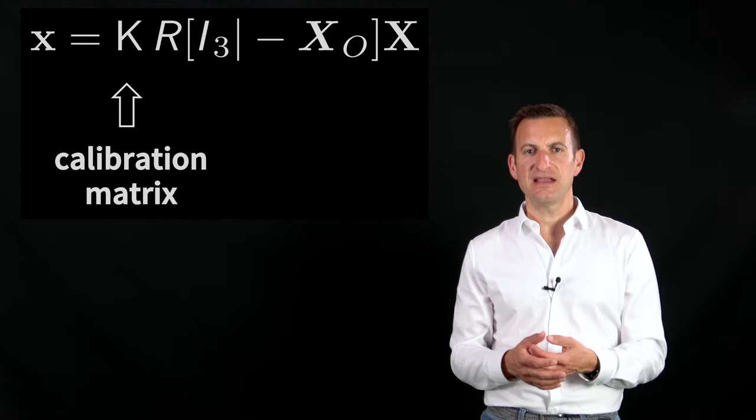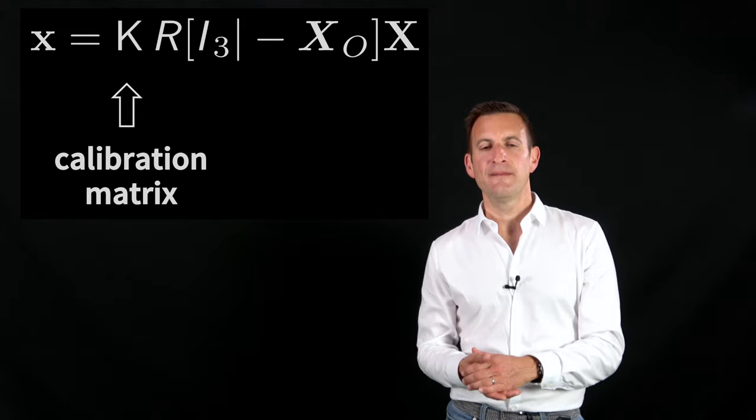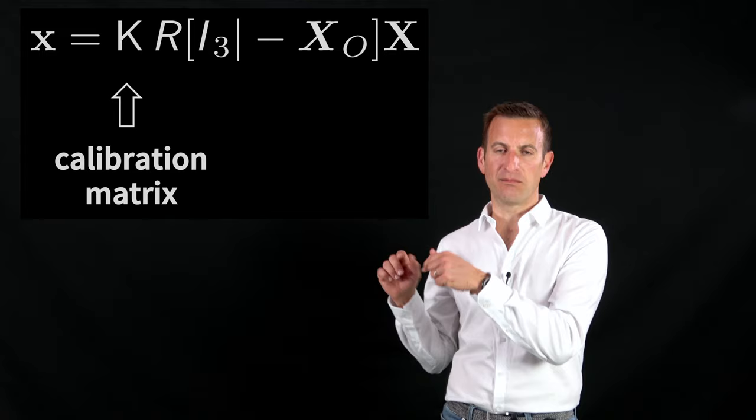Lowercase x is the point in the image. K is a calibration matrix which contains all these intrinsic parameters. So what we want to do is we actually want to estimate K over here. R is a rotation matrix telling us where the camera is actually looking to.